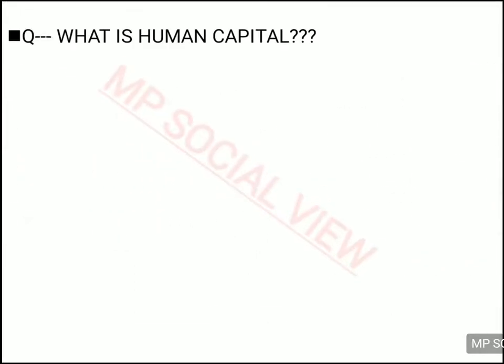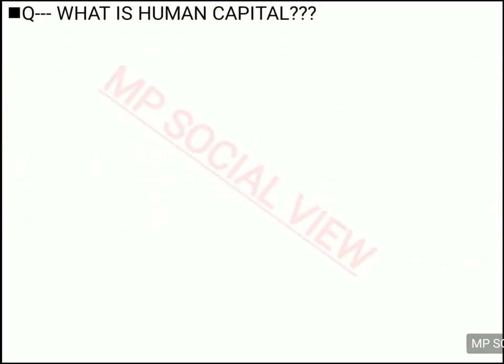In this chapter you are going to basically learn about human resource and human capital. This term is not new for you — you must have heard about it in the last chapter, 'The Story of Palampur,' where you read that there are four factors of production: land, labor, physical capital, and human capital. So that human capital is what we are going to discuss in this chapter.